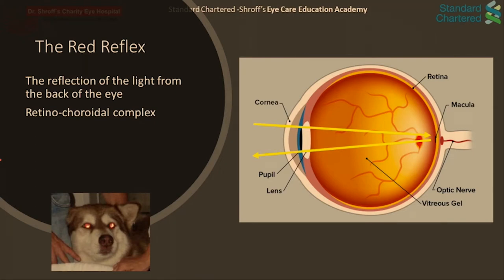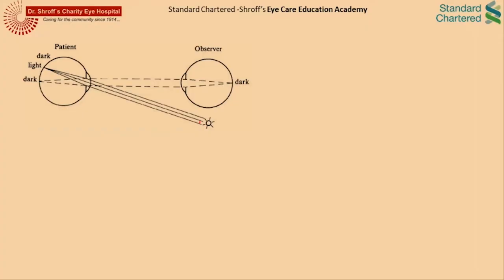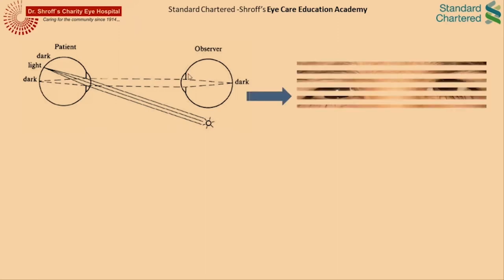One might wonder why this red reflex is not seen in everyone's pupil under normal circumstances. This is because the optical system of the eye is such that all the reflected light from the retinochoroidal complex, which is illuminated from a source of light, travels back and is focused onto the source of light itself. Thus an observer at a different angle observes a dark portion of the retina. Until and unless the source of light and the observer are optically aligned, it is impossible to capture the reflected light from the subject's retina. Thus, the pupil appears dark.